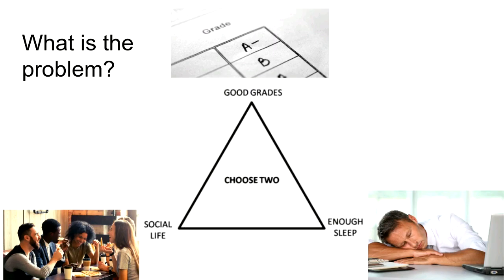I've described the three Ps — so what's the problem? Why can't we just do all of them? The problem is they conflict with each other. A classic example is like being at university: you want good grades, you want to have a great time, but you also need to sleep. The joke is you can choose two of these things — you can't have all three. Of course you trade off — you don't just choose two, but there are trade-offs between them all.